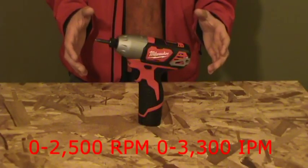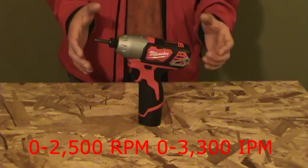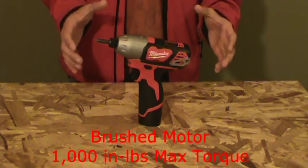It has a no load speed of 0 to 2500 RPM and 0 to 3300 impacts per minute. It has a brushed motor that Milwaukee claims to have 1000 inch pounds of max torque.